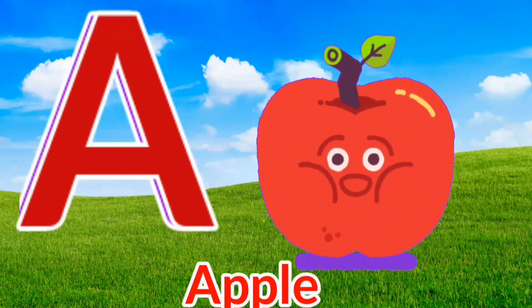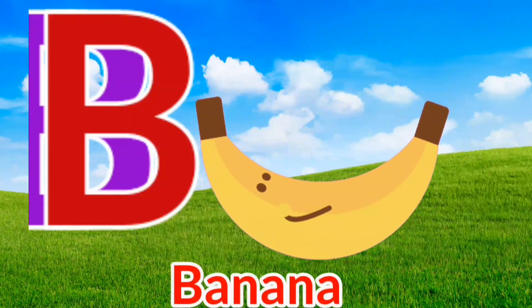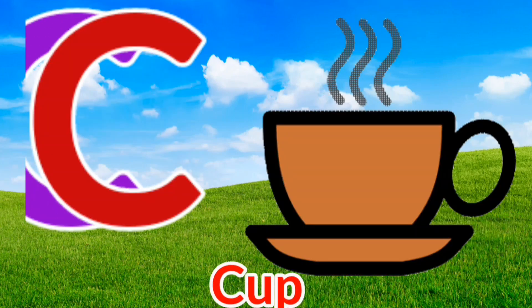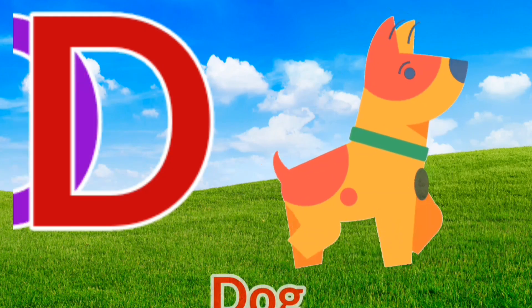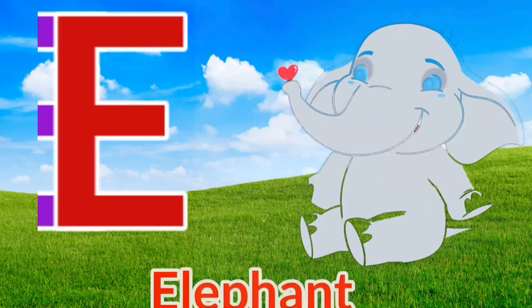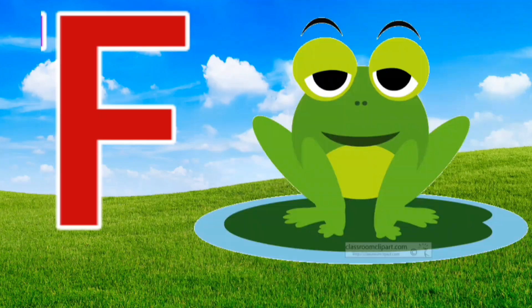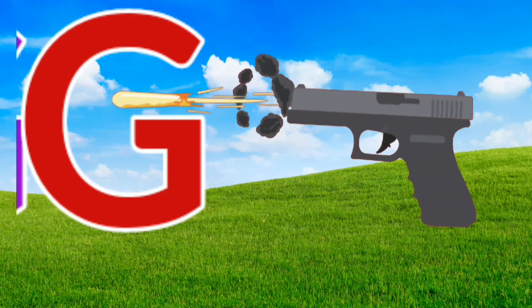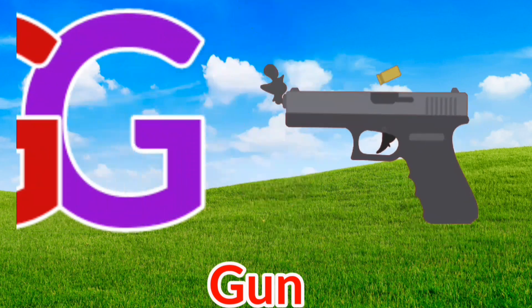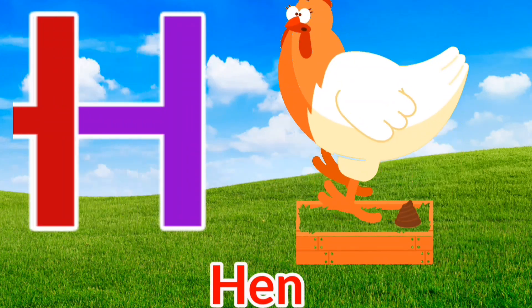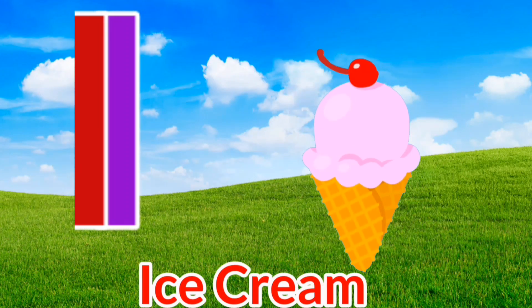A for apple, V for banana, C for cup, D for dog, E for elephant, F for frog, G for gun, H for hen, I for ice cream.